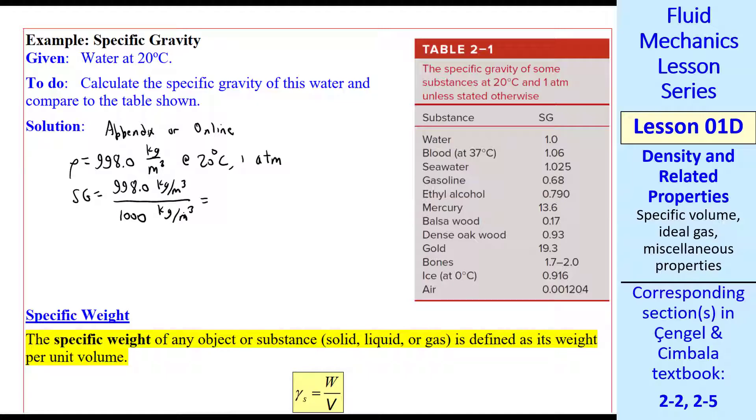Using the standard water density as a reference, our specific gravity is 0.9980 to 4 digits. Compared to the table,